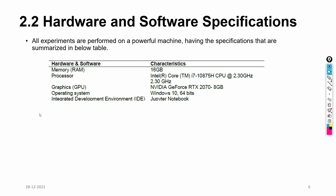For hardware and software specifications: the system configuration used for these experiments includes 16 GB RAM, a CPU processor, an NVIDIA RTX 2070 8 GB GPU, Windows 64-bit operating system, and Jupyter Notebook as the IDE.